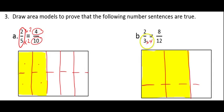That gives me 12 pieces in all. And, instead of having 2 pieces that are shaded, I have 8 pieces that are shaded. I multiplied both my numerator and my denominator by 4 to show that 2 thirds is equivalent to 8 twelfths.